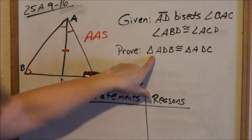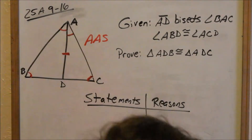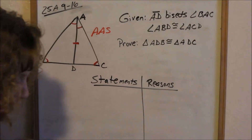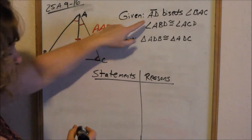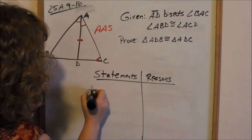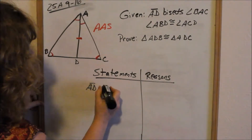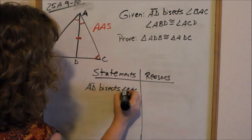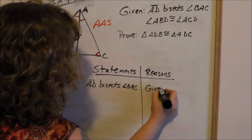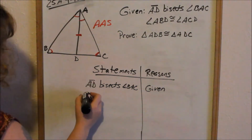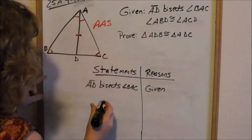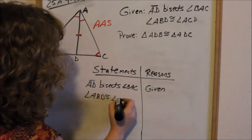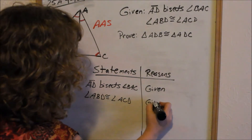I'm trying to prove that triangle ADB is congruent to triangle ADC — that will be my last statement. Now I need to put in my statements and reasons. I always start with my givens. First, I'll say that line segment AD bisects angle BAC — given. Next, angle ABD is congruent to angle ACD — given.